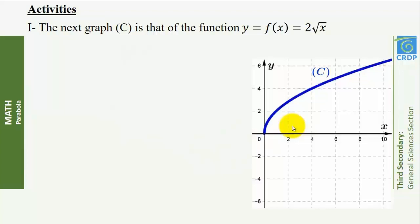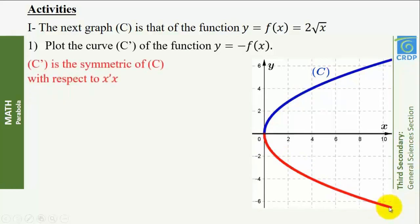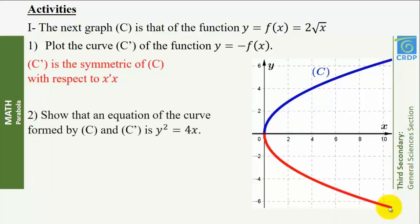First activity. The next graph C is that of the function y = f(x) = √x. Plot the curve C prime of the function y = −f(x). C prime is the symmetric of C with respect to x'x. Show that an equation of the curve formed by C and C prime is y² = 4x.